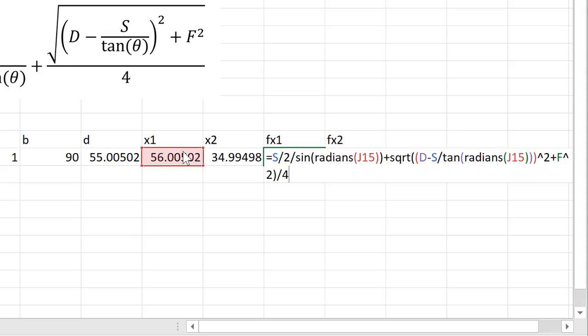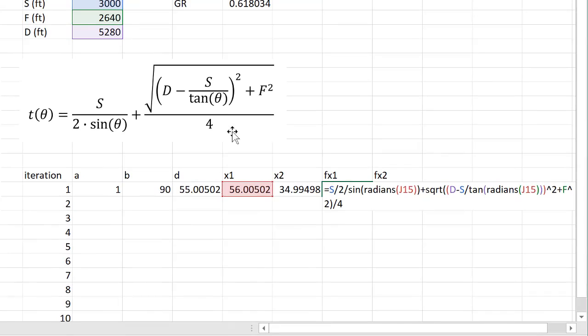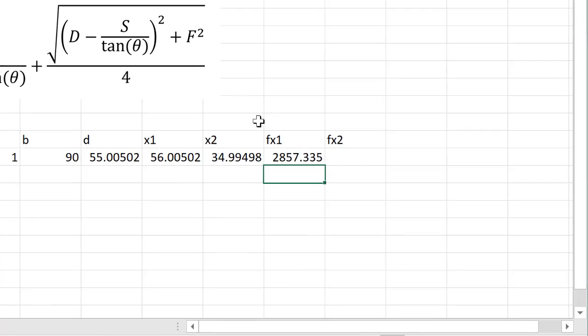f of x1 is just taking x1, remember x1, x2, a, b, these are our thetas. So I'm plugging that, I'm plugging x1 into this function above, making sure to convert the degrees, because these are all in degrees, to radians using the radians function. And we get f of x1. f of x1, and I can just copy this, ctrl c, and paste it there.